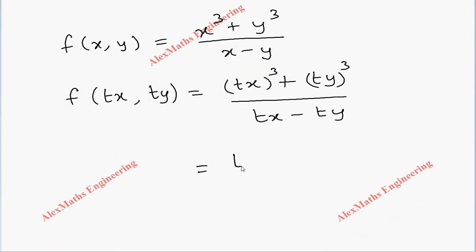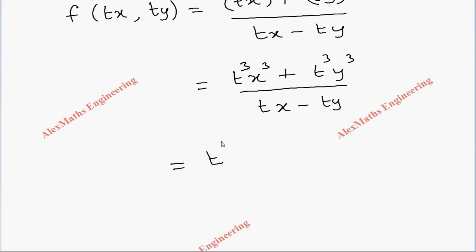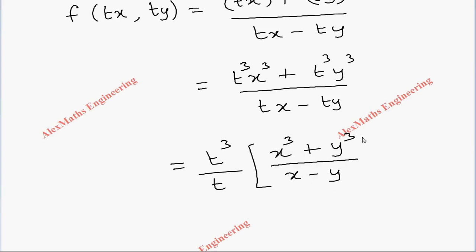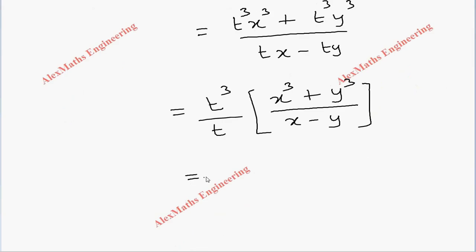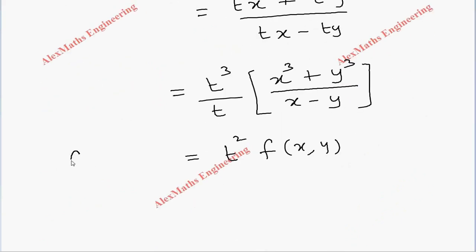The numerator will become t cubed x cube plus t cubed y cube, and the denominator as it is. From the numerator we can take t cubed common, and from the denominator we can take t common. So it will become x cube plus y cube divided by x minus y. After simplifying this we get t squared into f(x, y), because this is our original function.